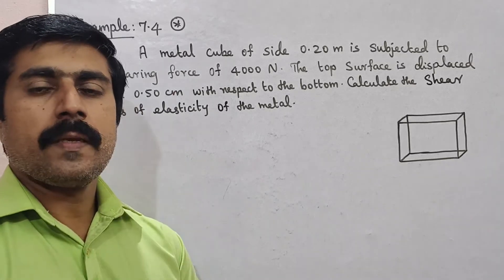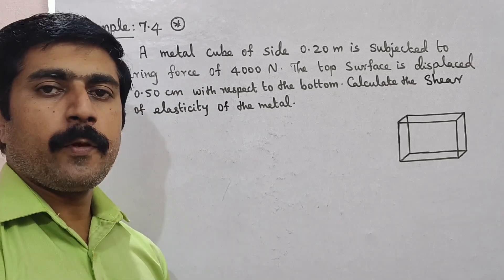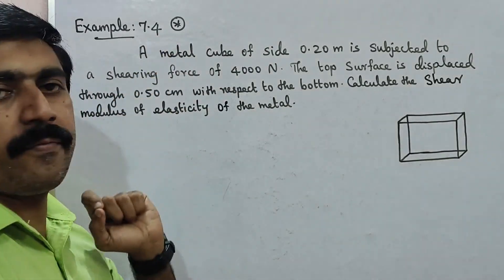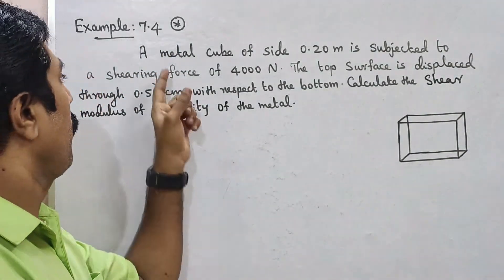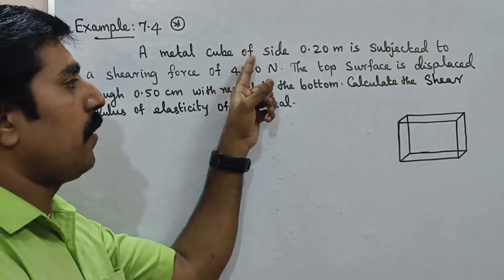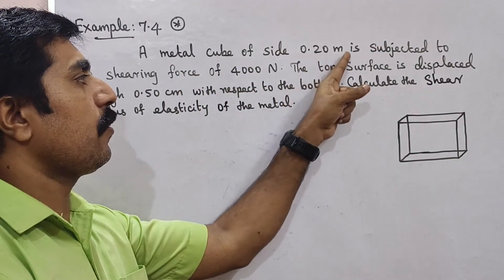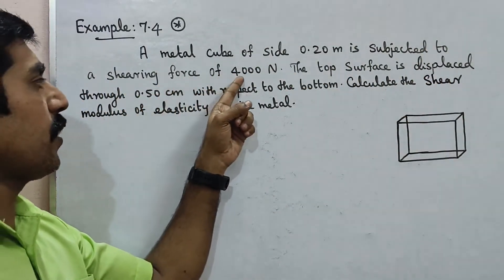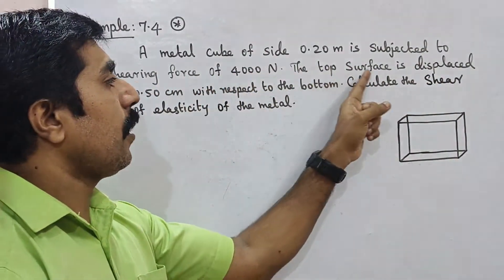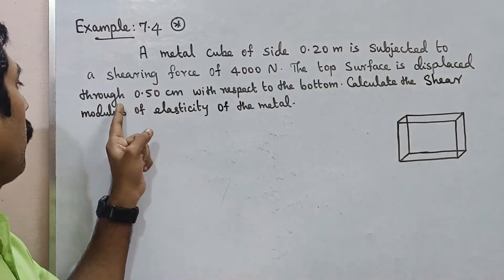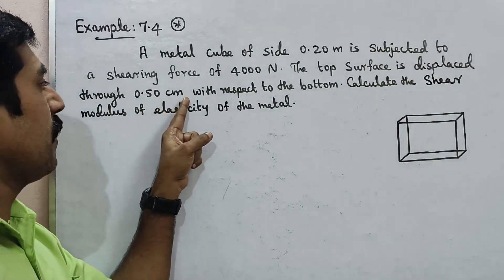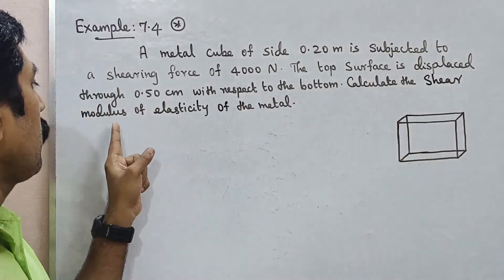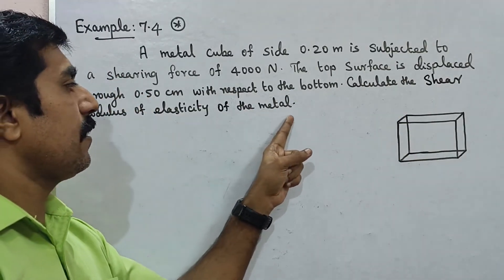Hi students. Now we have Example 7.4. A metal cube of side 0.20 m is subjected to a shearing force of 4000 N. The top surface is displaced through 0.50 cm with respect to the bottom. Calculate the Shear Modulus of Elasticity of the metal.